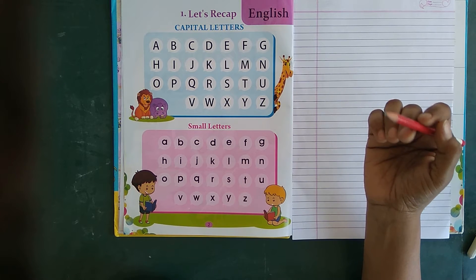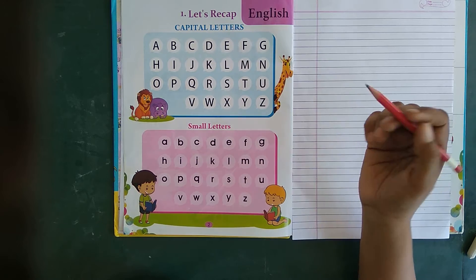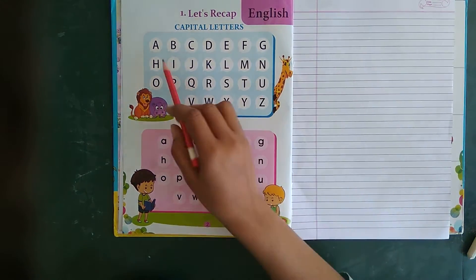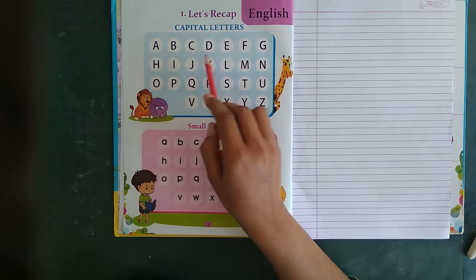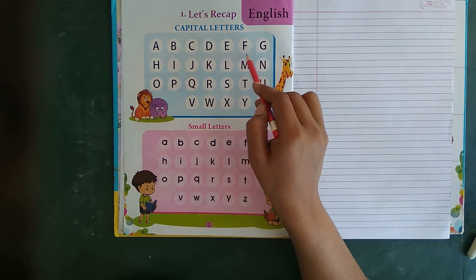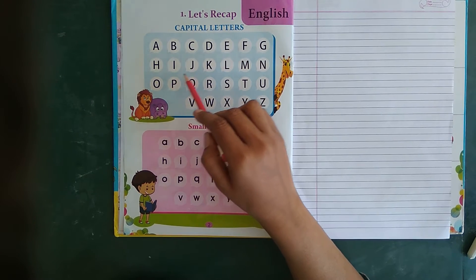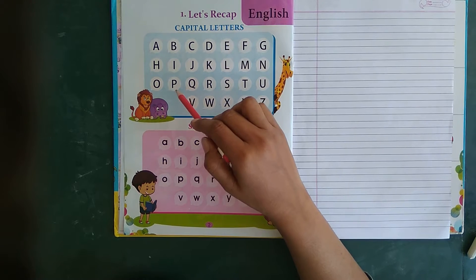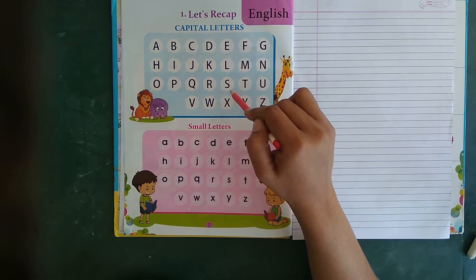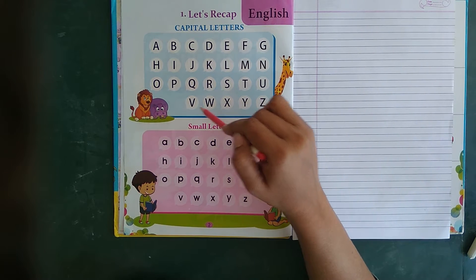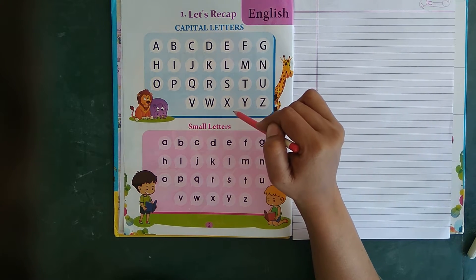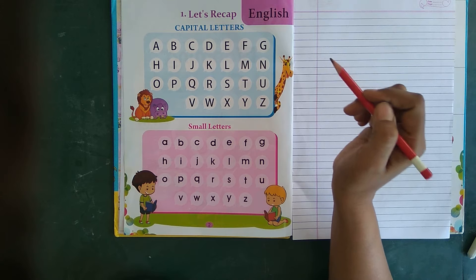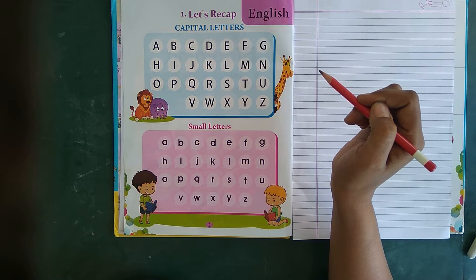Groups of letters is called Alphabet, or A to Z is called Alphabet. How many letters in Alphabet? There are 26 letters in Alphabet. Let's count. There are 26 letters in English Alphabet.